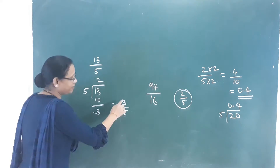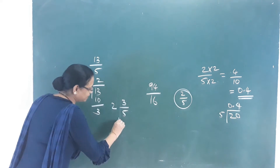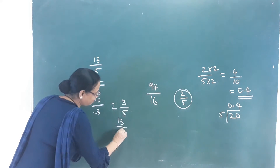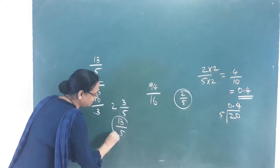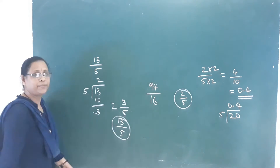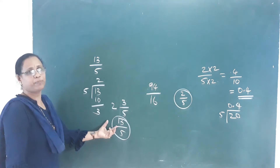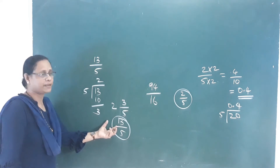To go back: 2 into 5 is 10, plus 3 gives 13, so 13 by 5. What is that? Improper fraction.